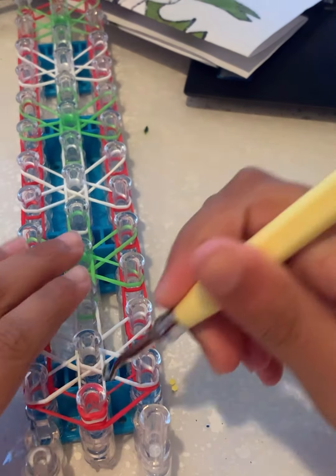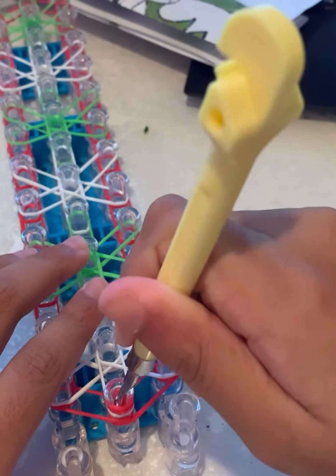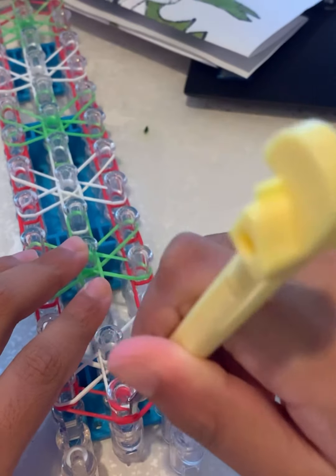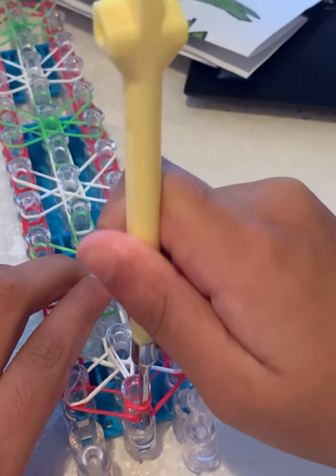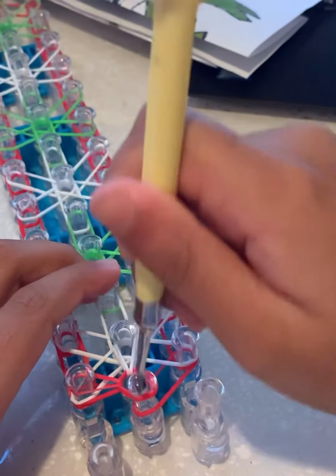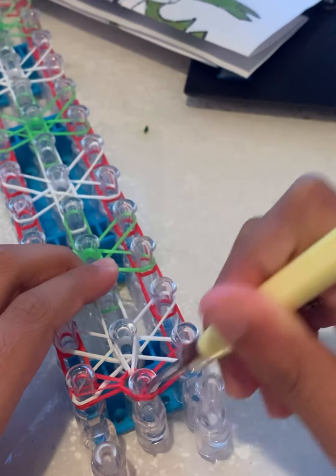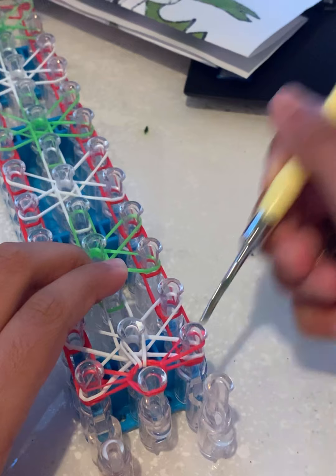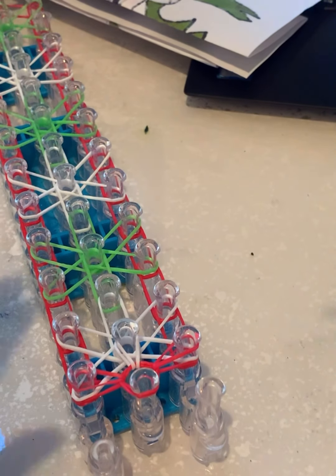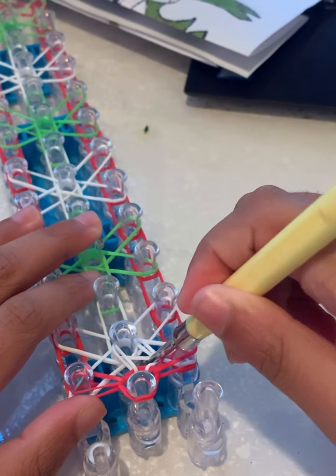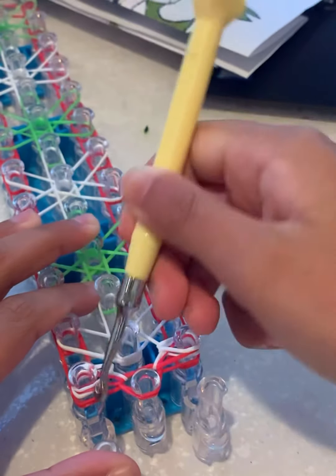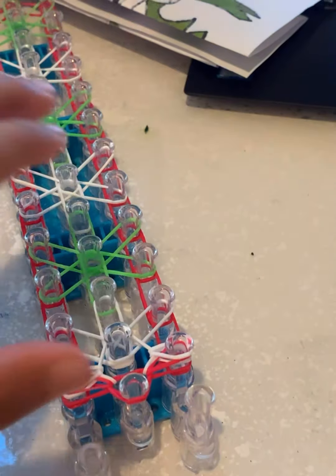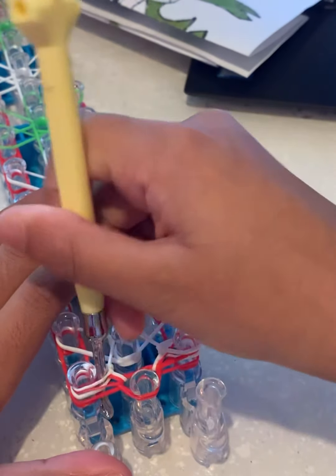Now make sure you have your hook ready and we are going to be starting the hooking process. You just first go forward and then you're gonna be going outwards, outwards like that. And then we're gonna go inside this peg, loop these two things outwards like that.